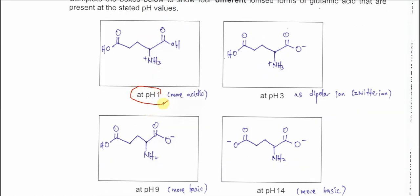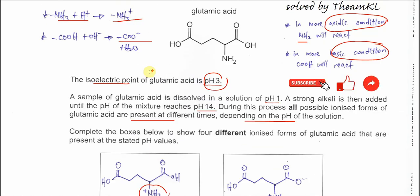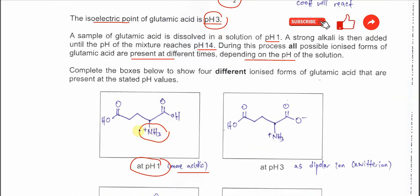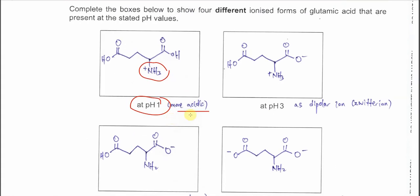At pH 1, which is more acidic than the isoelectric point of pH 3, only the NH2 will react — it gains a proton to form NH3⁺, while COOH remains unchanged. At pH 3, the isoelectric point, the molecule exists as a dipolar ion: the COOH releases a proton which is gained by NH2 to form NH3⁺, while a carboxylate (COO⁻) is also present. The structure is charge-neutral overall, carrying both a positive and negative charge.